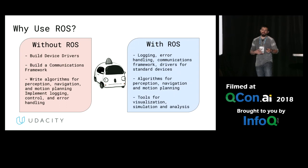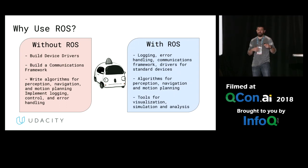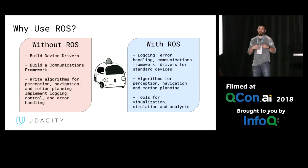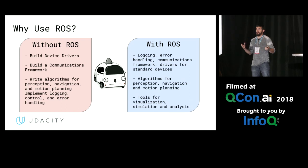Without ROS, you're writing a whole bunch of drivers. You're writing the communications framework. And all the algorithms that you want to do for self-driving cars, you're writing them yourself. So that takes a while, especially if you're trying to get a prototype going, just a proof of concept. With ROS, you get a lot of things for free: the logging, error handling, and communications framework. Most importantly, drivers for those different hardware devices that you're using.